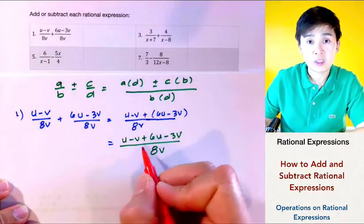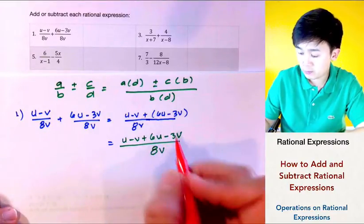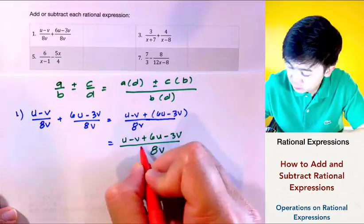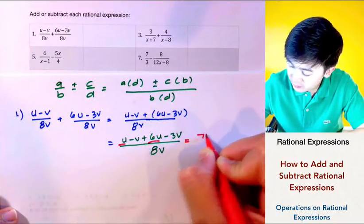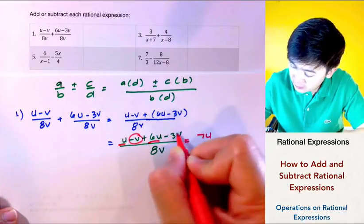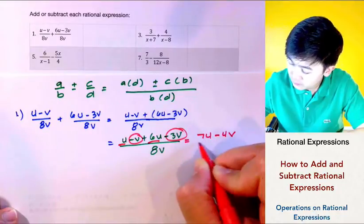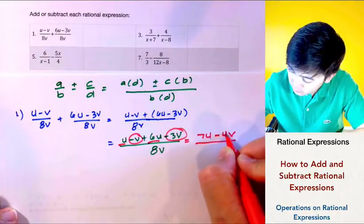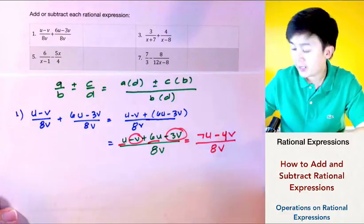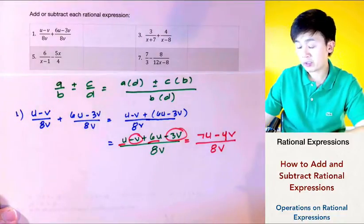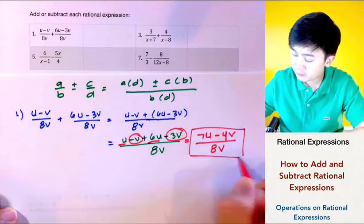In rational expressions, we simplify the numerator and leave the denominator in its factored form. We combine U and 6U, which gives us 7U, and negative V and negative 3V, which gives us negative 4V. So the result is 7U minus 4V all over 8V, and this is the sum for problem number one.